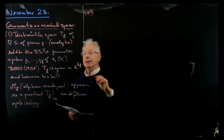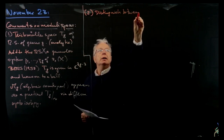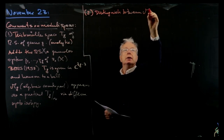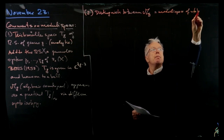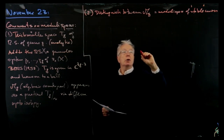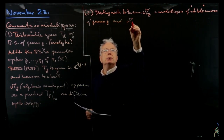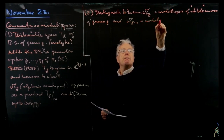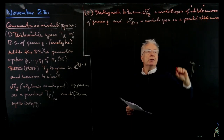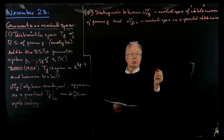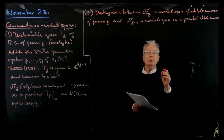The next comment is to distinguish between two notations in the literature: between Mg, which is the moduli space of stable curves, and MgN, which will be the moduli space of n-pointed stable curves. We will be mostly interested in M0N.